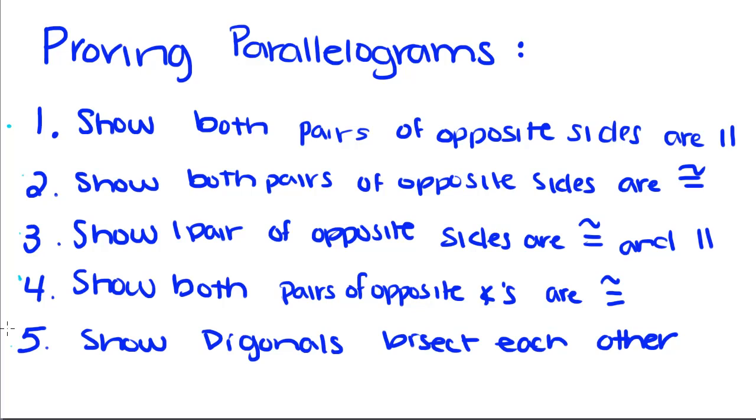Unlike triangle proofs, we don't have an A-S-A or side-angle-side. Instead, we're just going to have to write out that since both pairs of opposite sides are parallel, the shape is a parallelogram. So, now let's do some examples.